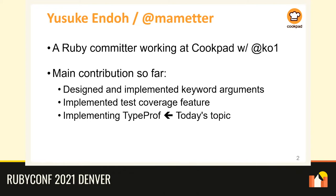Before the main topic, let me introduce myself first. My name is Yusuke Endo. My Twitter handle is Mametta. I am a Ruby committer working at Cookpad. Our company has employed two Ruby core committers: Koichi Sasada, who is an author of the current Ruby VM, and me.